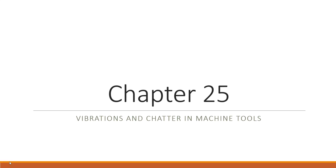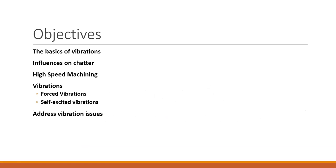We're going to go into this one section of chapter 25 on vibrations. Vibrations is a major issue with machine tools — it actually causes chatter in your workpiece, which impacts your quality, your cutter life, and your tool life. Our objectives for this lecture are to go through the basics of vibrations, what influences chatter, the two different types of vibrations, and then how we actually address vibration issues. High-speed machining will be the last topic.